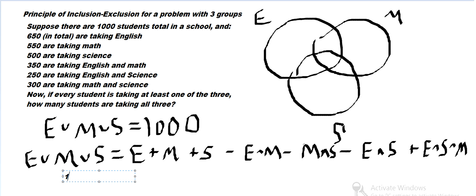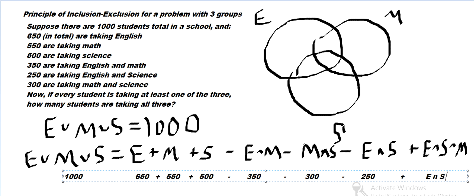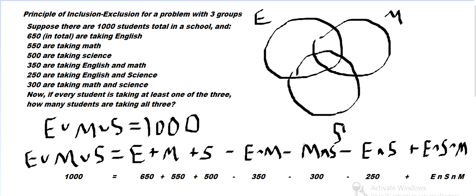So we know we've got 1,000 students total. And there is 650 in English, 550 in Math, 500 in Science, and then subtract the intersection of English and Math, minus 350, minus the intersection of Math and Science is 300, minus the intersection of English and Science, minus 250, and then we add the intersection again, for the intersection of all three. So plus the intersection of all three. And we know that 1,000 equals all that. So we can simplify this.